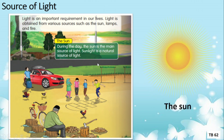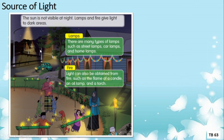The second source of light is lamps. As you know, the sun is not visible at night, so lamps and fire give light to dark areas. There are many types of lamps such as street lamps, car lamps, and home lamps — lampu jalan, lampu kereta, ataupun lampu di rumah.